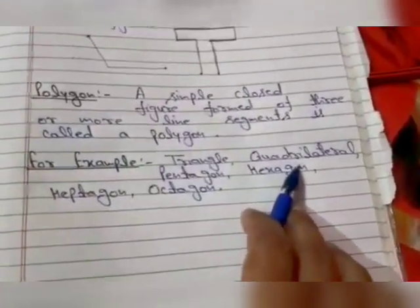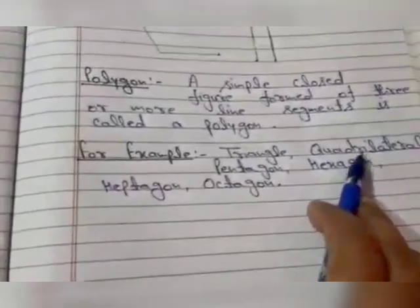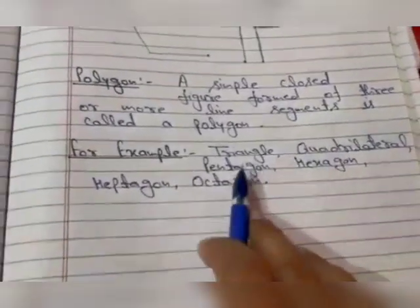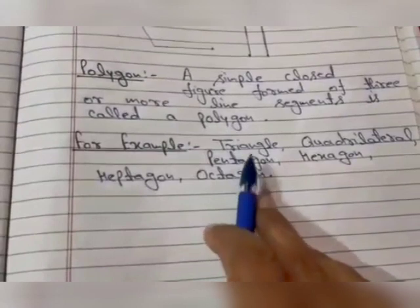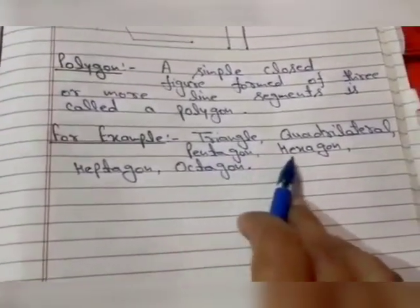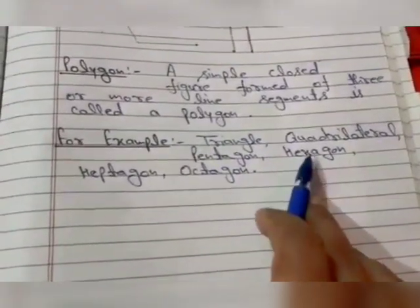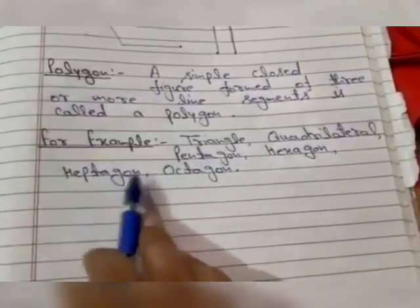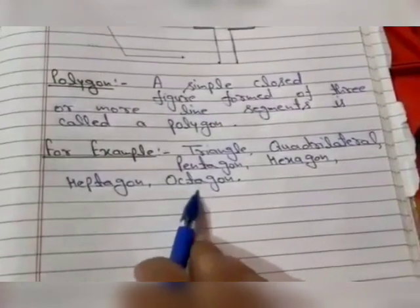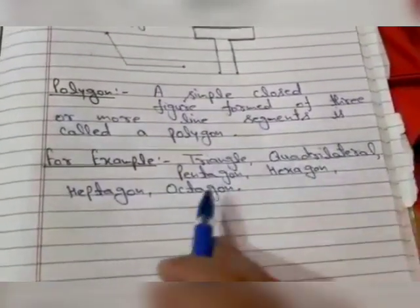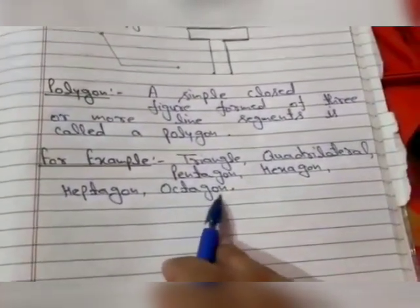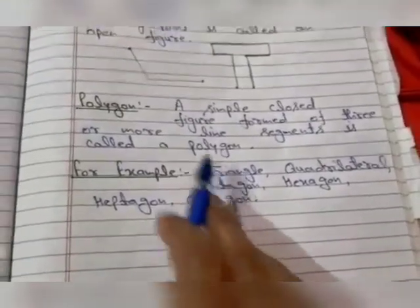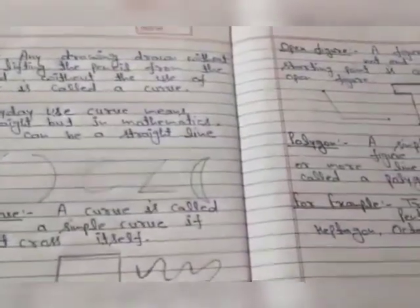Pentagon is also a polygon. Hexagon is a six-sided figure, so it's also a polygon. Heptagon is a seven-sided figure, and octagon is an eight-sided figure, so octagon is also a polygon. With the help of this video, you can solve your exercise 4.2. Thank you, all the best.